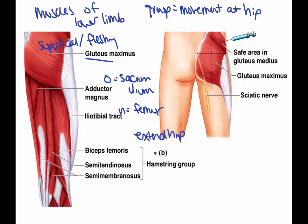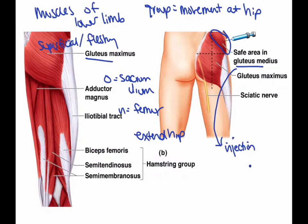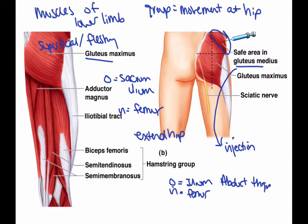Next up we have the gluteus medius, pictured right over here. This is a great injection site because you don't have any major nerves or anything that you could hit, and it's also pretty fleshy. The origin is the ilium, the insertion is the femur, and it helps to abduct the thigh and helps to steady the pelvis when you're walking.